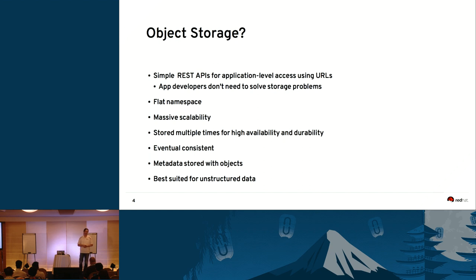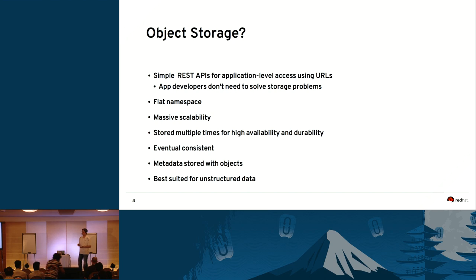There is a caveat you need to take into account when using object storage: it's eventually consistent. If you store an object and then do a listing of the container where it was stored, the container listing might not yet be updated. This happens especially if you have failures within your system, and object storages are traditionally built to work around these failures — as a normal user, you don't notice when a node is down or a disk fails.